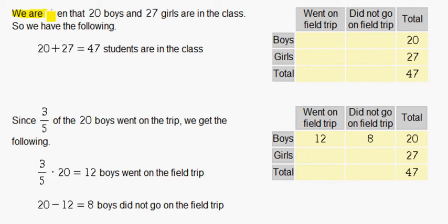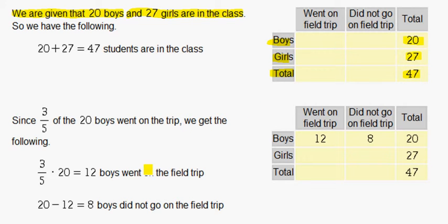We are given that 20 boys and 27 girls are in the class. So in total, there are 20 boys, 27 girls, which is 47 total. 20 plus 27 is 47 students in the class, which is the total.